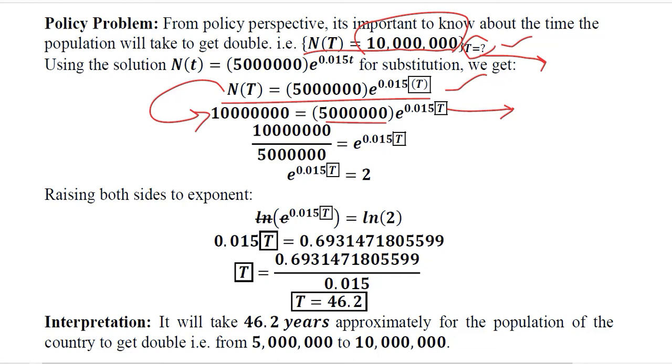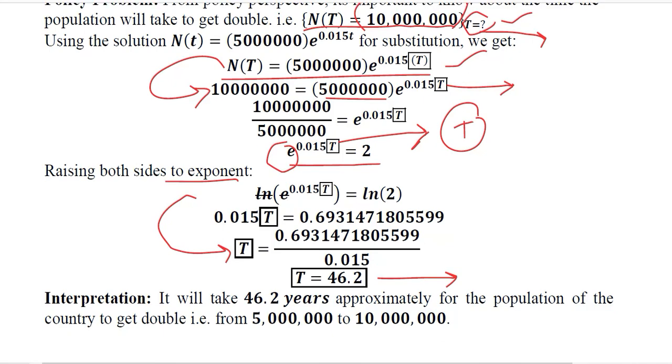This simplification will give us the value of this expression. We want to get rid of the exponent because we want to find the value of t, the time period. We got the value of t which is 46.2, and it shows that after 46.2 years we will reach the population of 10 million from 5 million.